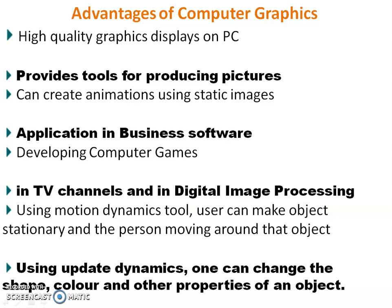In TV channels, we are using many computer graphics applications. In digital image processing, there are lots of uses. Using motion dynamics tool of computer graphics, users can make objects stationary and the person moving around that object. Using update dynamics, one can change the shape, color or other properties of an object.